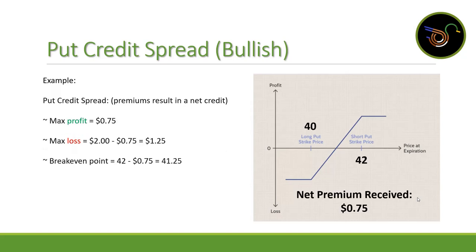For an example: if our long put strike price is $40 and our short put strike price is $42, and we receive a $0.75 credit — max profit is the $0.75 premium received. Max loss is the $2 wide spread minus the $0.75 premium, which gives us $1.25. The breakeven point is the short put strike price of $42 minus $0.75, giving us a stock price of $41.25.